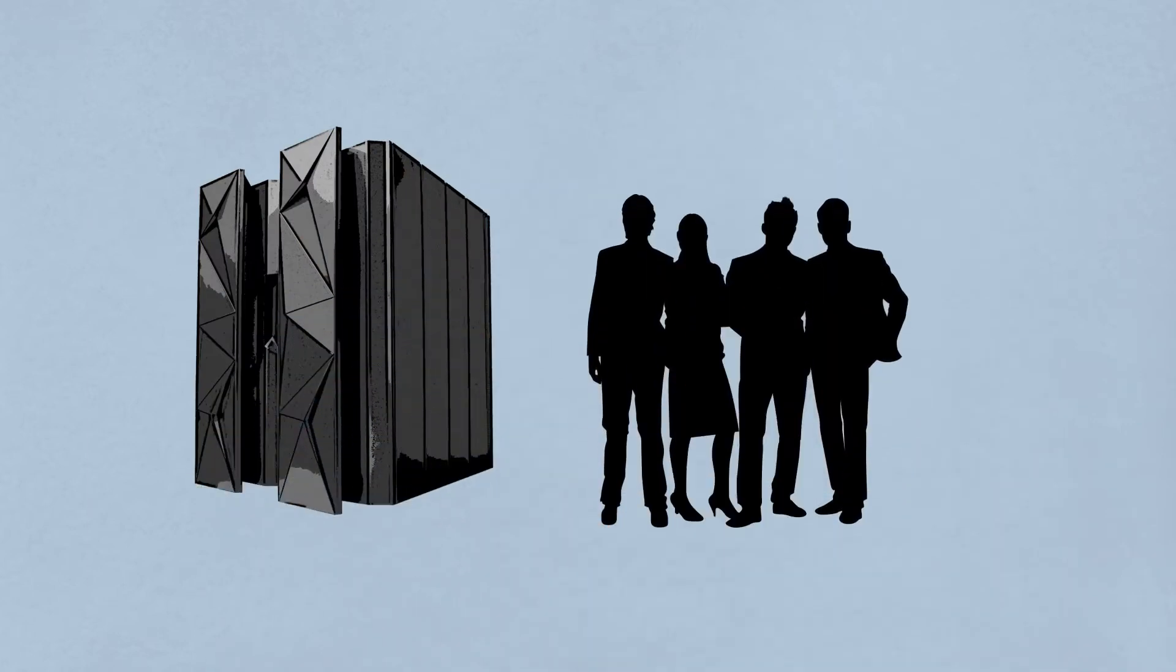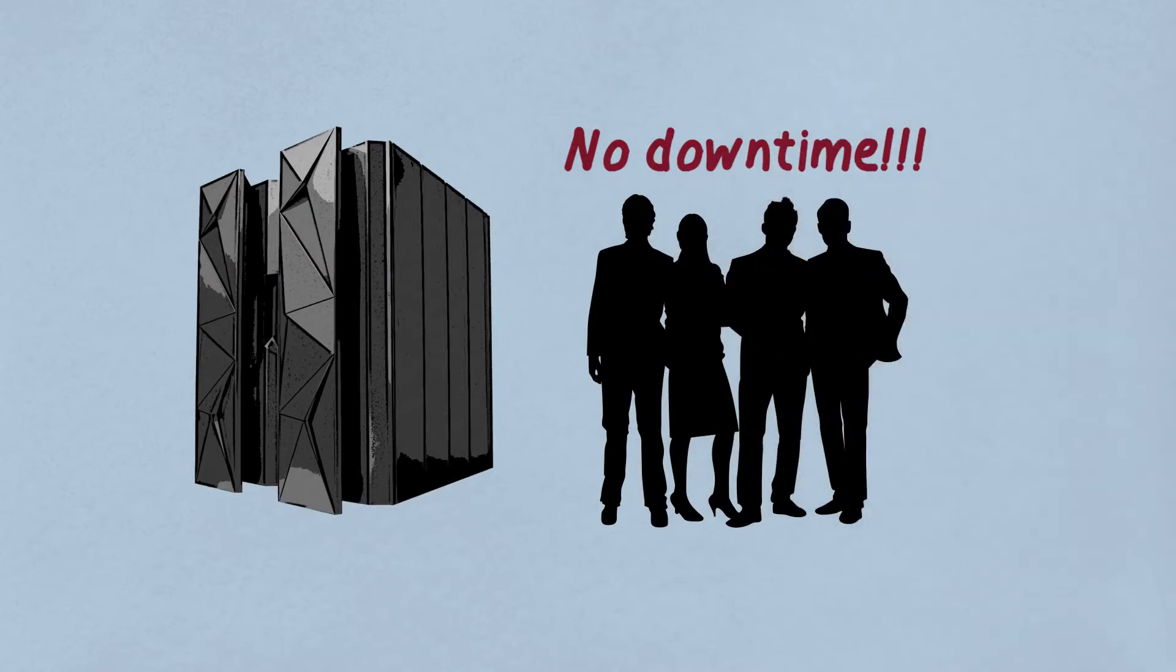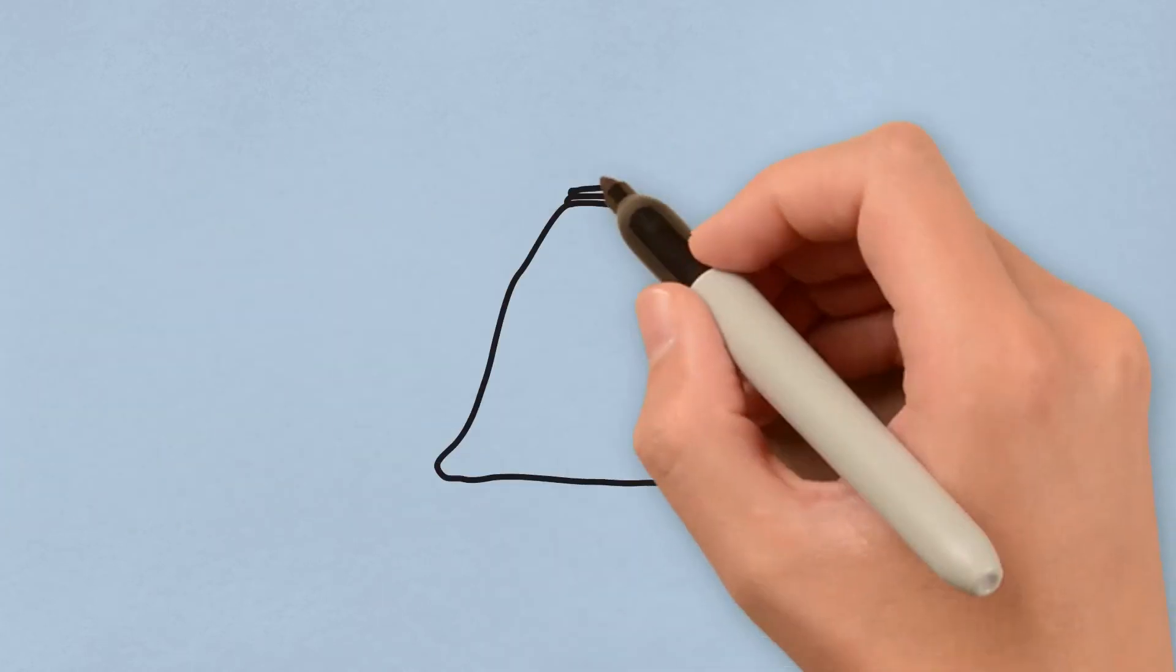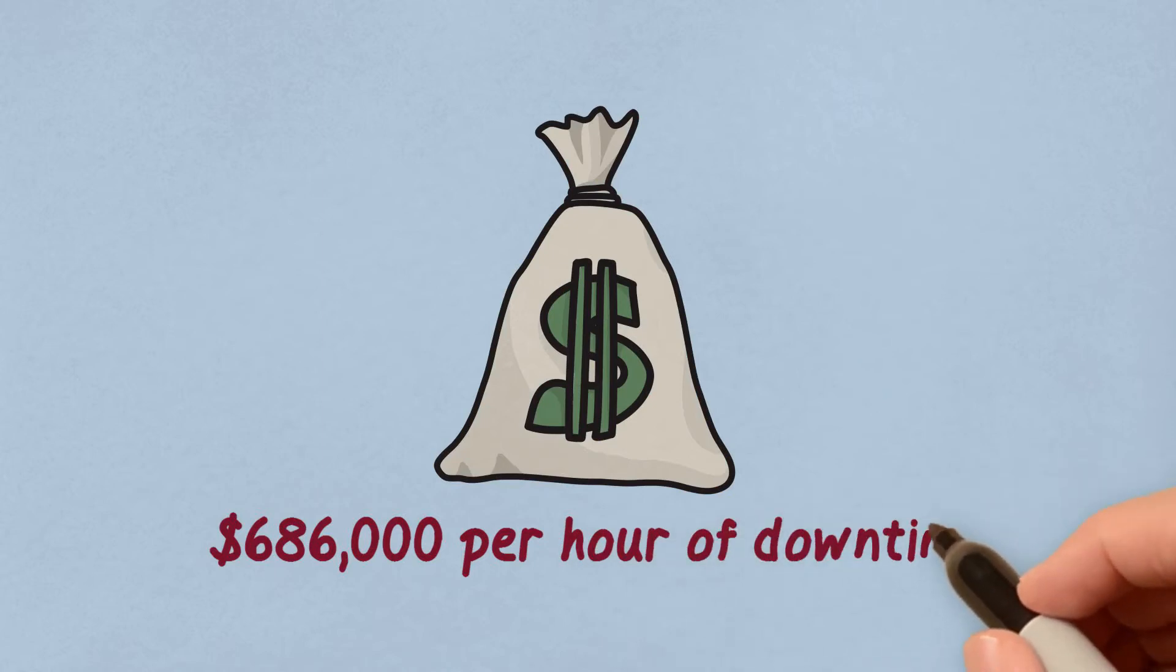Of course they have. The ZOS operating system may indeed have zero unplanned downtime, but every shop still experiences issues on Z that impact at least some end users. And they are expensive. $686,000 per hour of downtime for large companies according to a recent Aberdeen Group survey.